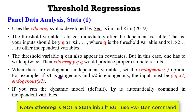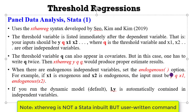What if you have endogenous independent variables? All you need to do is invoke the endogenous option and put those variables in brackets. You can see an example here.